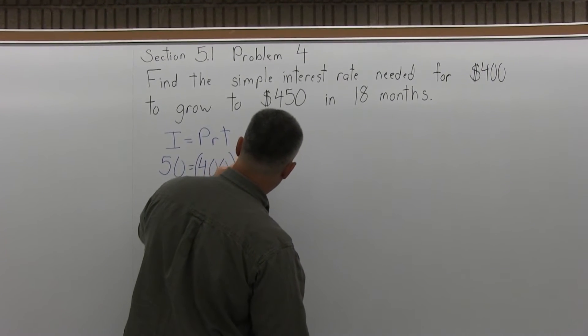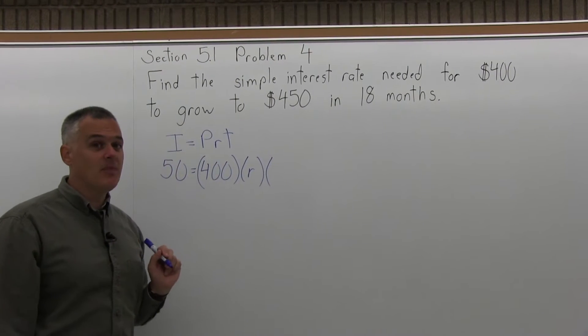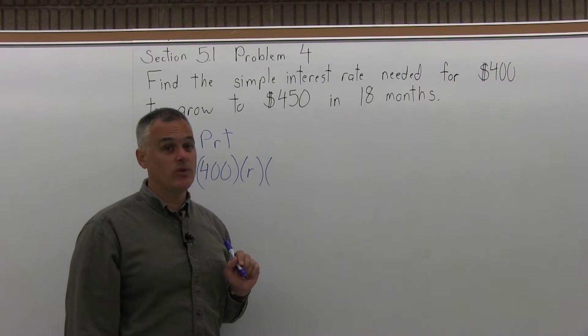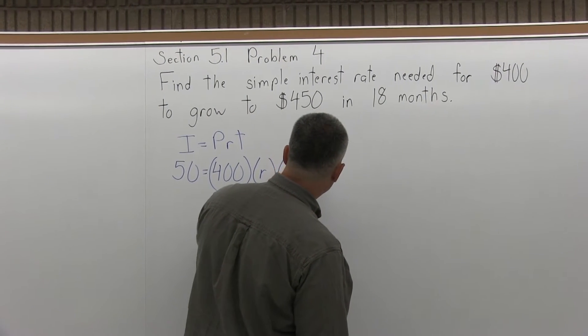So I'm going to have $400 times R times T, the time in years. Now 18 months has to be put in as 1.5 years, 18 months is a year and a half.